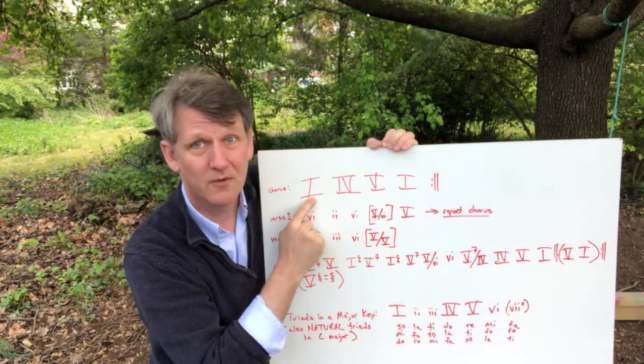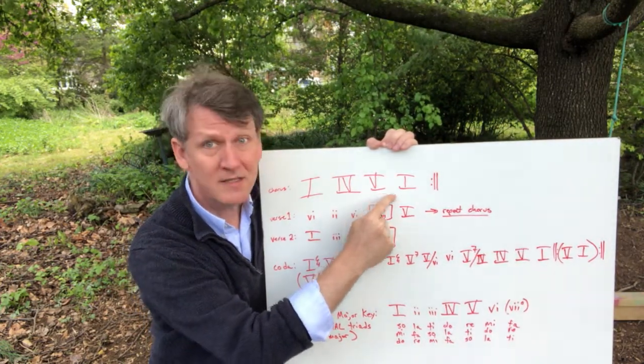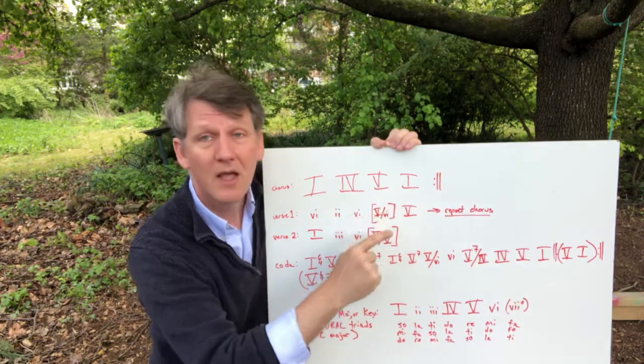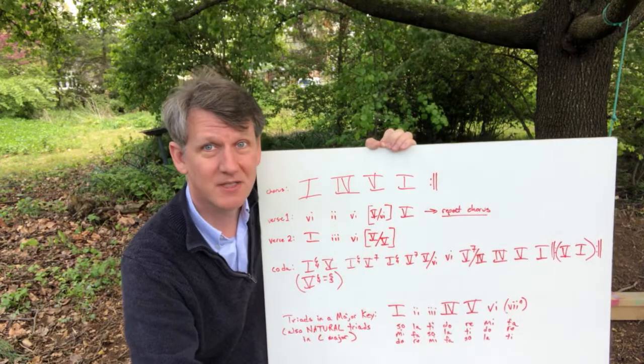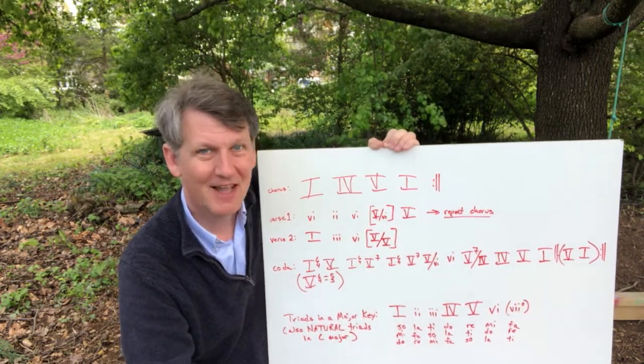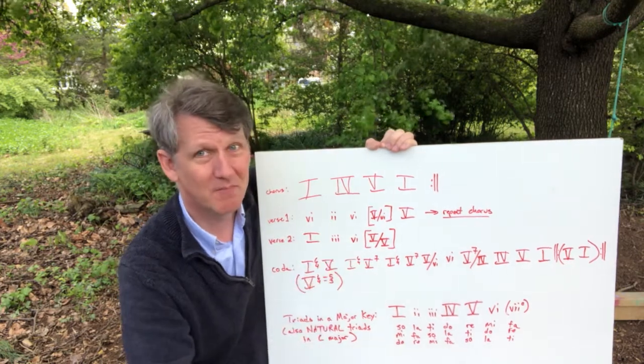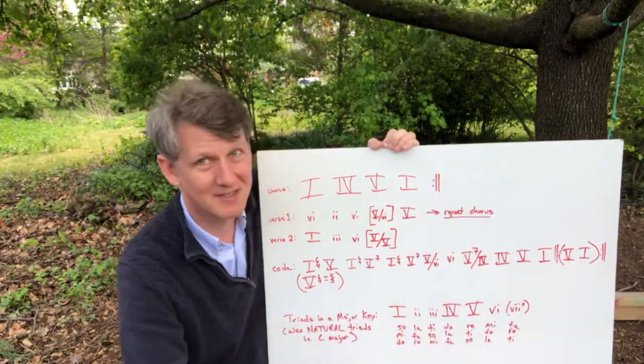So we sing DO MI SO FA LA DO SO TI RE TI SO DO DO DO. So that's a one chord, when we sing those, we are singing the three major chords in a major scale. And that song is in a major key. We're singing those three major triads. Those are the three major triads in the key.